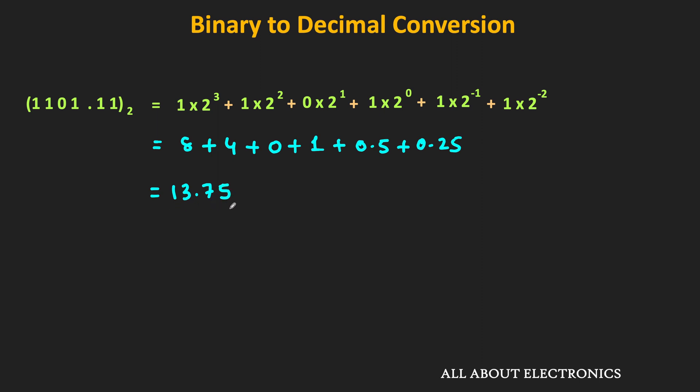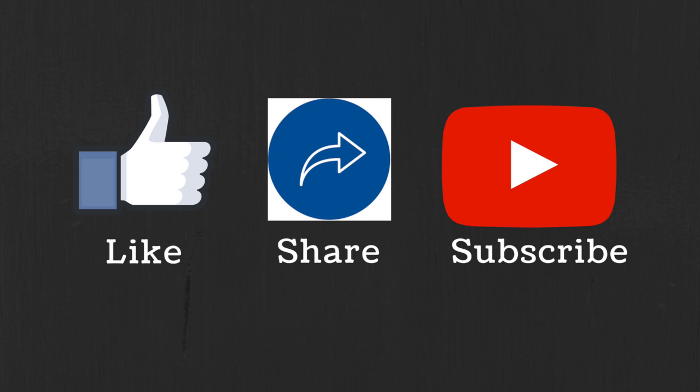So in this way, we can convert any binary number into the decimal equivalent. In the next video, we will see how to convert any decimal number into the binary equivalent. If you have any question or suggestion, do let me know in the comment section below. If you like this video, hit the like button and subscribe to the channel for more such videos.